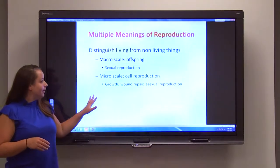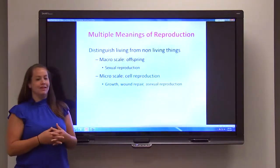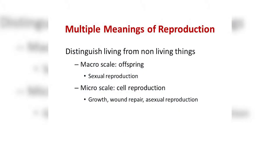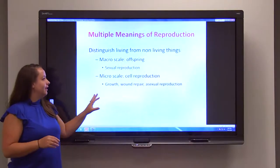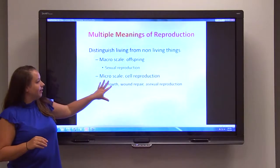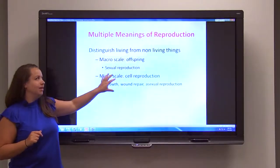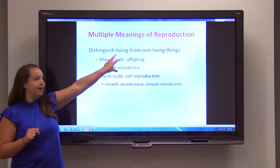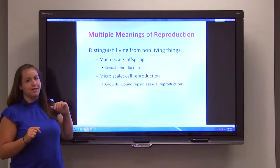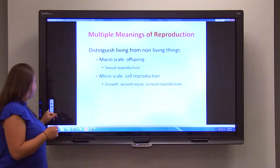The microscale is important because this is going to function with growth, becoming bigger, making larger structures, wound repair, and asexual reproduction. Today we're going to focus on the micro version — mitosis. Later on we'll come back and talk about meiosis, which is the sexual reproduction for offspring.